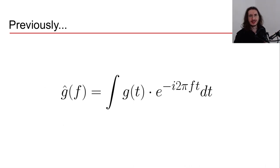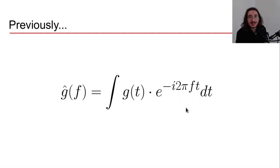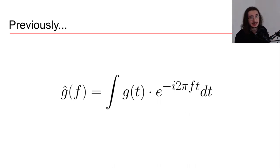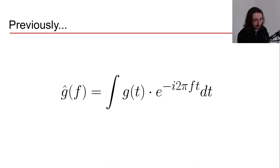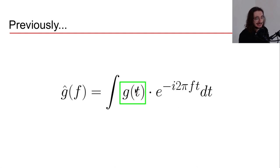Last time we defined the Fourier transform expressed through complex numbers. I'm not going to get into the details here — I take for granted that you already know that, but if not, check out the previous video. This formula works for analog signals, in other words signals that are continuous in time.